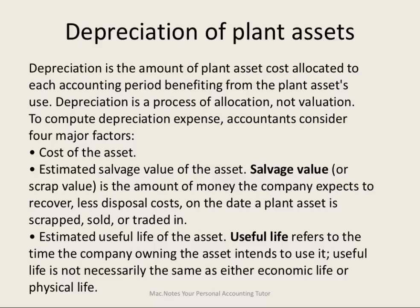How do we depreciate that? This asset will help us earn revenue for more than one accounting period, so we must allocate the cost of that asset to each of those accounting periods in which it has contributed. To do that, we must take into consideration the total cost of the asset, then estimate how much the asset would be worth at the end of its useful life, and then determine how many years that useful life is — how many years it will help us earn revenue.